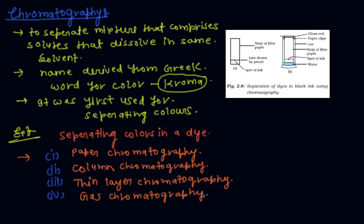So, this is the chromatography process. I hope you understand what chromatography is. Now I describe this diagram: how to separate colours in a dye. The ink has water as the solvent and the dye is soluble in it. As the water rises, it takes the particles of dye along with it.